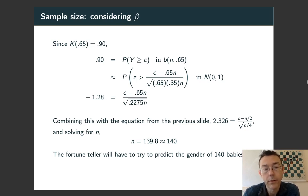We now have two equations relating c and n, and we can solve those two simultaneously, and we get n = 139.8, which as always we need to round up. Conclusion: the fortune teller is going to have to have a sample of size 140. They're going to need to guess the gender of 140 babies to get this significance level and this power level.